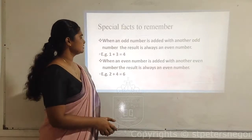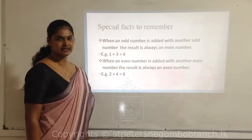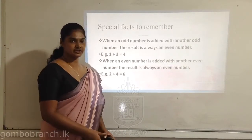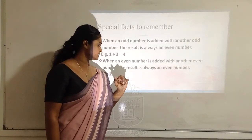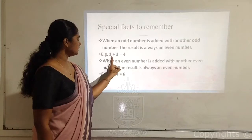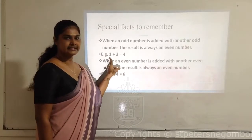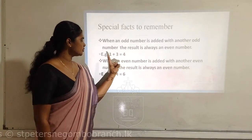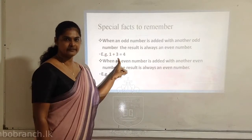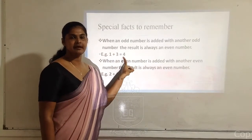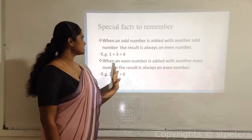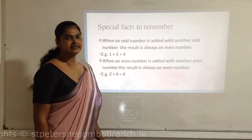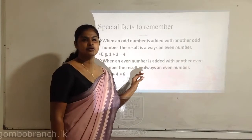There are special facts to remember about odd and even numbers. Let's go with simple calculations to understand these special rules. Take 1 plus 3: 1 is an odd number and 3 is another odd number. When you add two odd numbers together, the answer is always an even number. When an odd number is added with another odd number, the result is always an even number.